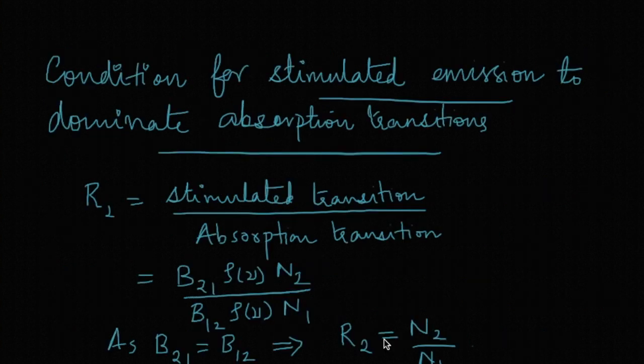Now moving on to the condition for stimulated emission to dominate over absorption transition. Let us write the rate R2 as stimulated transition to absorption transition. So stimulated transition is given by the rate equation B21 ρ(ν) N2 divided by absorption transition given by B12 ρ(ν) N1. Now cancel out ρ(ν) from both numerator and denominator - we get B21 N2 by B12 N1. But from Einstein relation we know that B21 is equal to B12, that is the probability for absorption transition is same as stimulated transition.